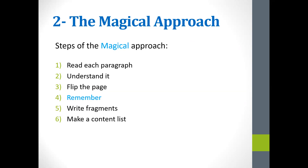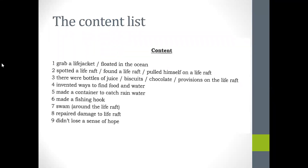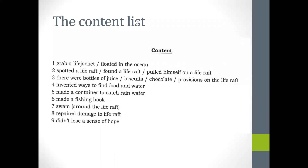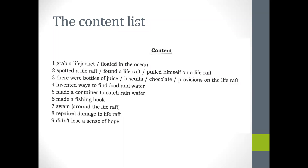Make a content list. When you write these fragments, you make a content list, and at the end you write your summary paragraph using these lists. For example, for the Cinderella story, instead of writing full sentences, write fragments like: 'life with dad and mom,' 'mom dies,' 'stepmom.' When you see these fragments, your mind will create new sentences. Writing fragments gives your mind a space to think, to create new sentences using your own words — that's the target of the summary.